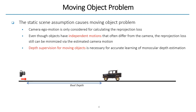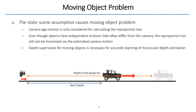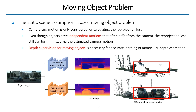However, in the conventional self-supervised monocular depth estimation pipeline, camera ego motion is only considered during the reprojection loss calculation, which is the static scene assumption. But if there is an object that has independent motions, the reprojection loss is minimized to wrong depth due to the wrong disparity. This moving object problem affects the depth estimation network to predict inaccurate depth.